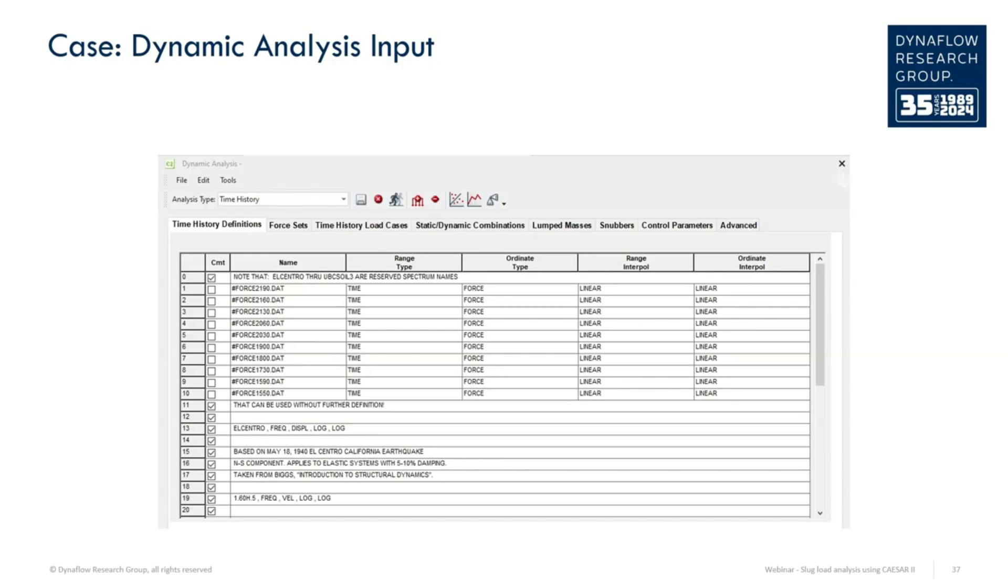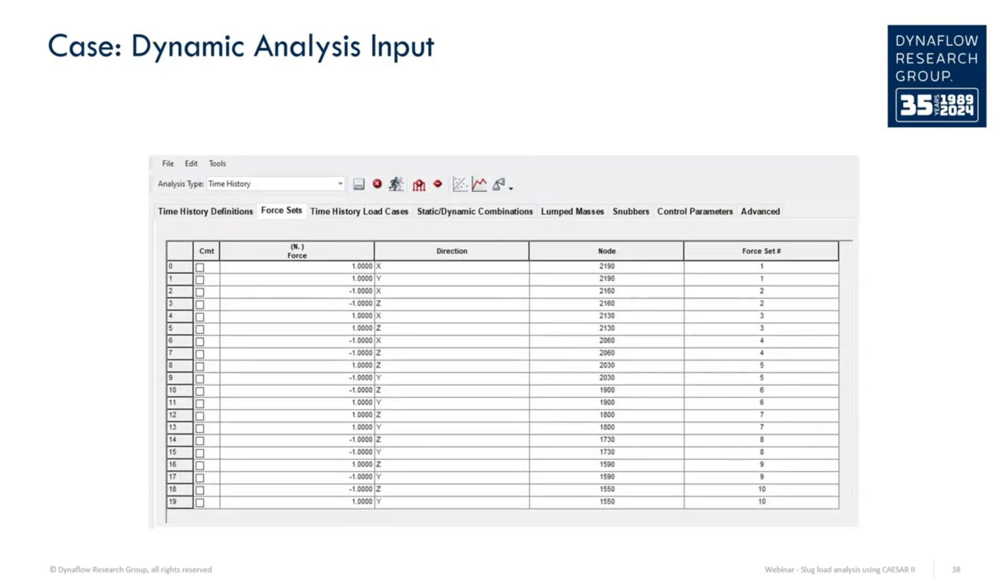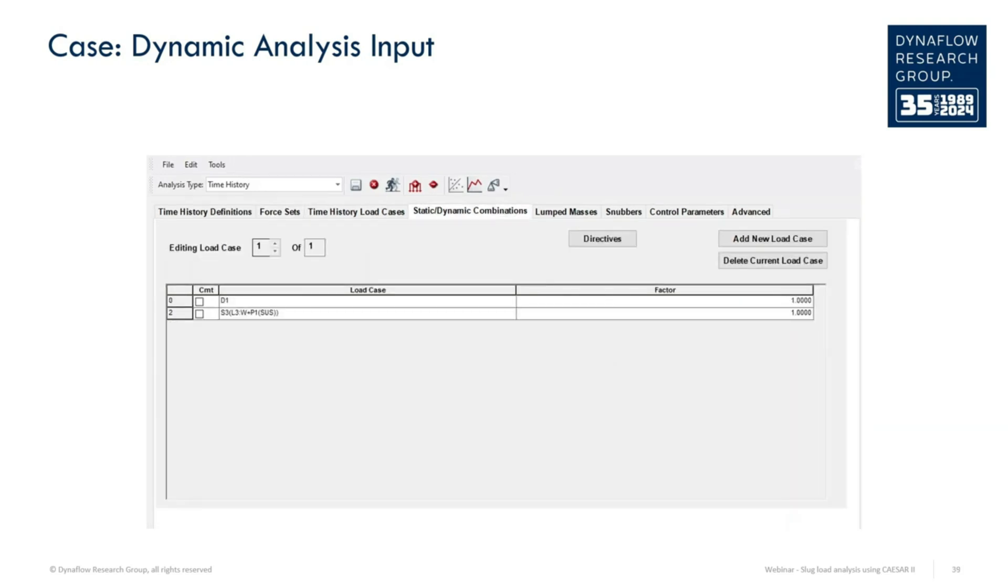To understand all of the different settings and input, a deep dive into the dynamic analysis module of CSR2 is required. The gist of it for the time history analysis is that a force over time is defined in a number of data files. The locations for these forces and their directions are specified in the force sets tab, and optionally, the occasional loads can be combined with the operating or sustained loads to determine, respectively, the support loadings and the occasional stress in the system.